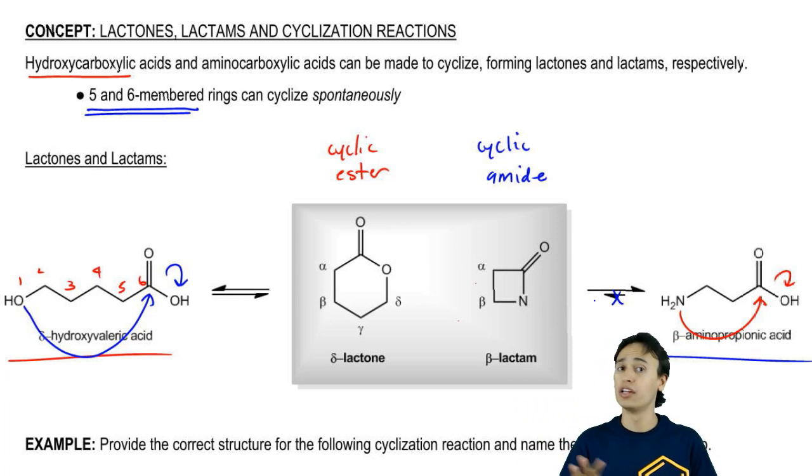Makes sense so far. Five and six is good. Anything less than that is bad. Also anything bigger than that, also not very favored.